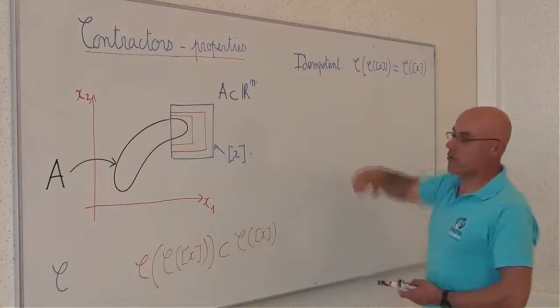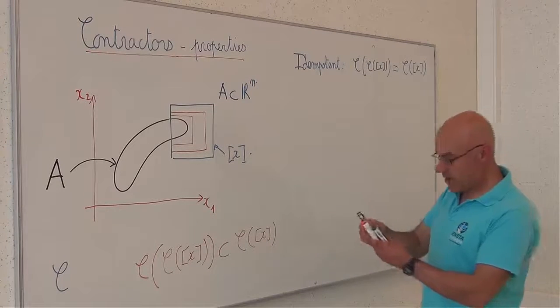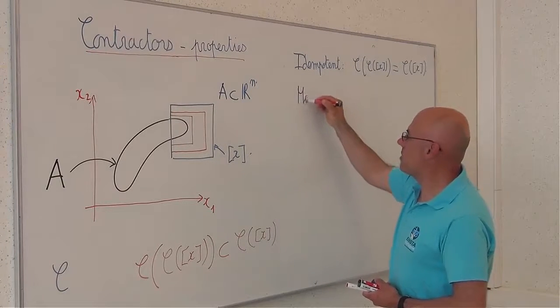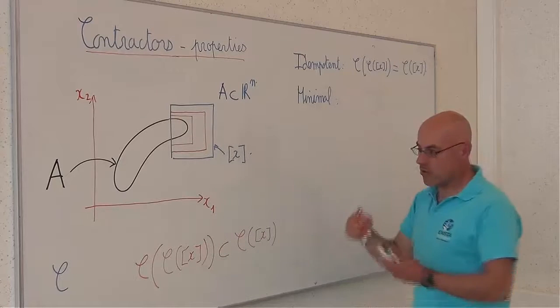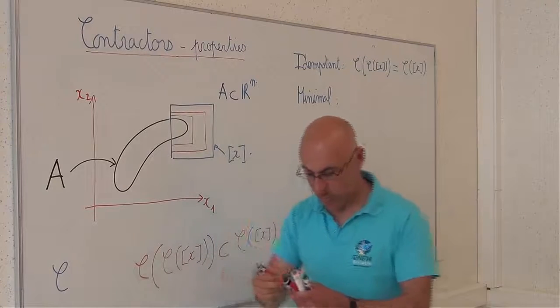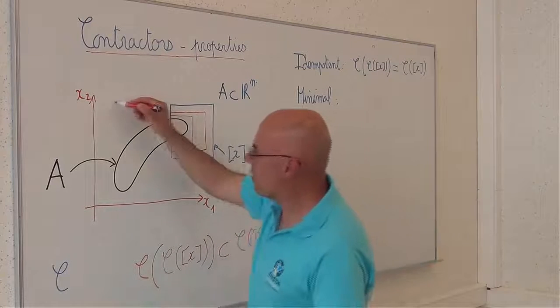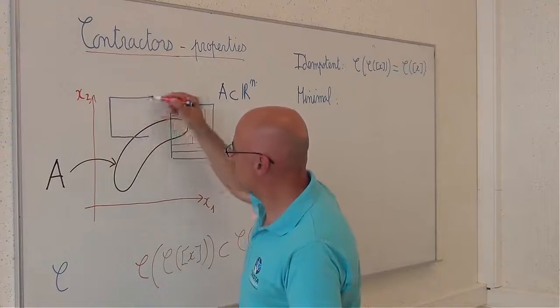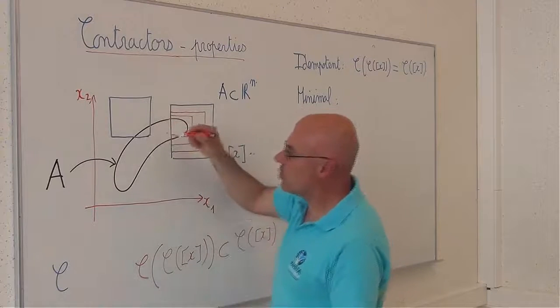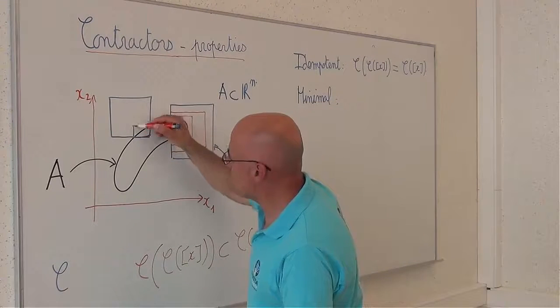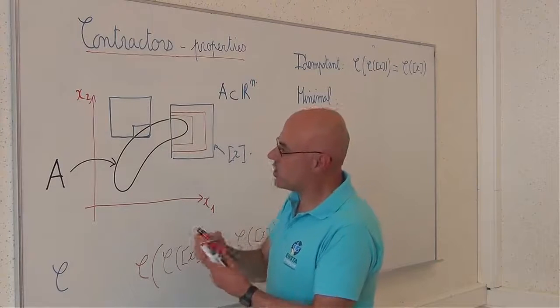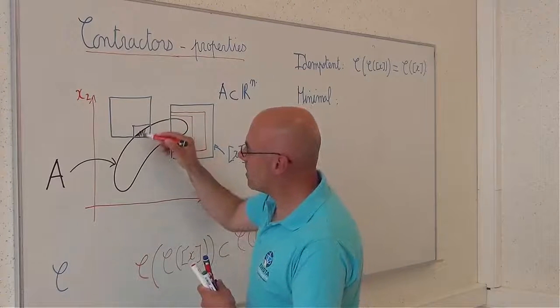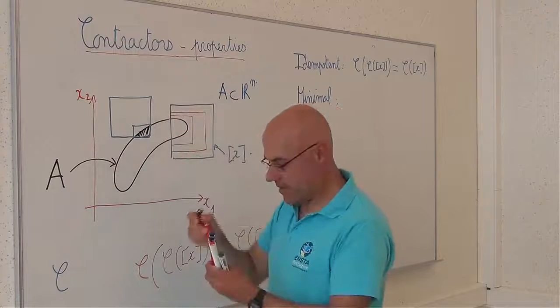Among the idempotent contractors, I can find a minimal contractor. So, what is a minimal contractor? The contractor C is said to be minimal if, when I take a box X, the contraction will correspond to the intersection between the initial box and the set A.